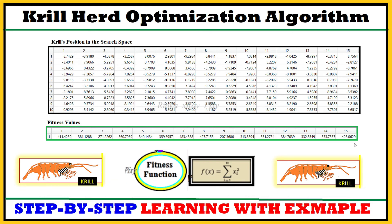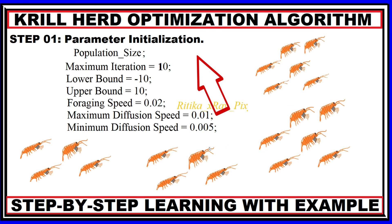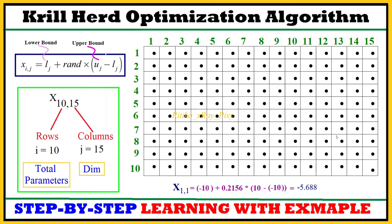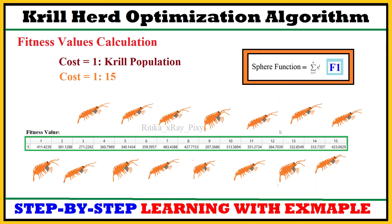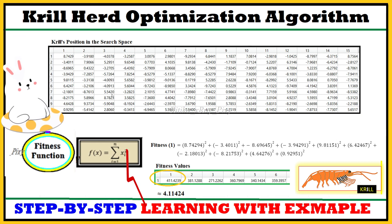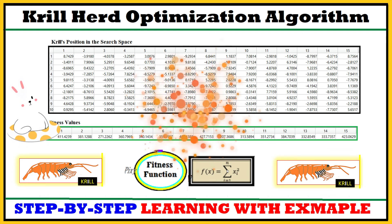In the Krill Herd Optimization algorithm, the krill's position is considered as the total number of design variables, corresponding to the food location in the search space. First, initialize all important parameters; then use the position initialization equation to get the positions; then use any cost function to calculate the fitness values for the krills. That's all about this video — if you have any questions, comment below, and thanks for watching.